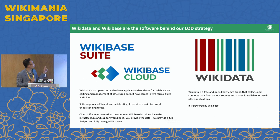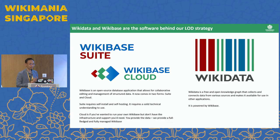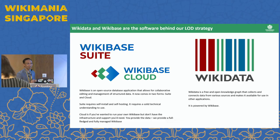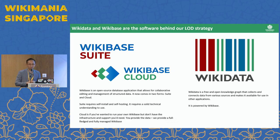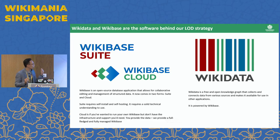Let me talk very quickly about the three important products or projects behind our Wikimedia Deutschland linked open data strategy. First, on the right side, we have Wikidata. Everyone knows about Wikidata. It is a free and open knowledge graph — arguably the mother of all structured data in the world today, with more than 100 million data items. Apart from Wikidata, in Wikimedia Germany we also have two main products, namely Wikibase Suite and Wikibase Cloud, which most of you are probably not very familiar with, and that's why we are here today.